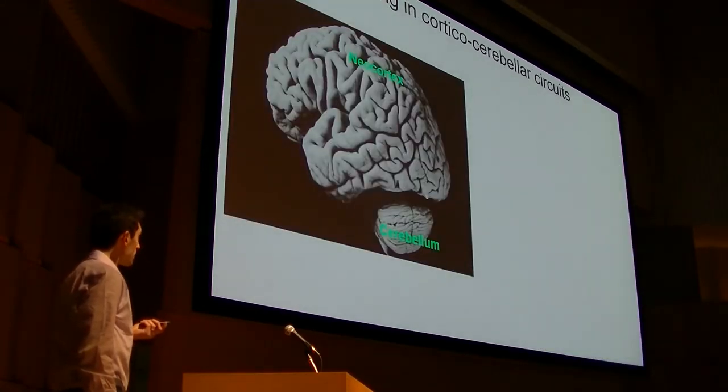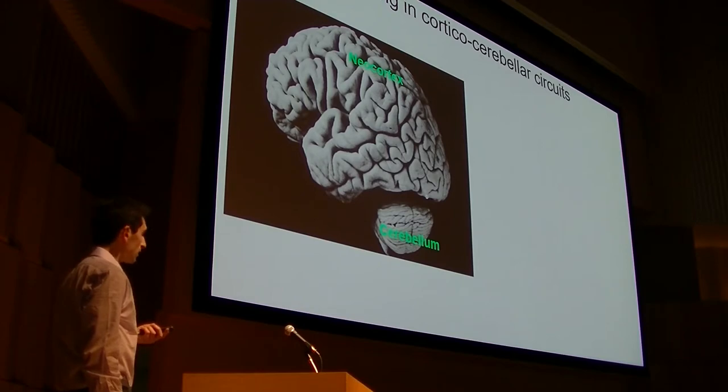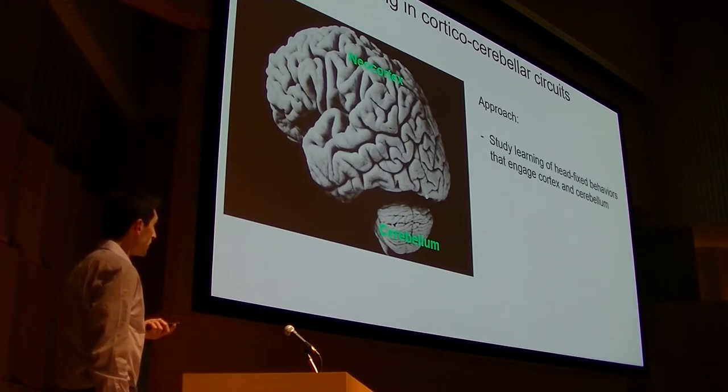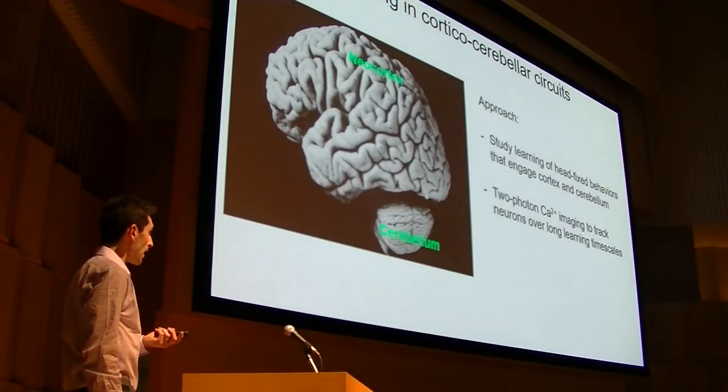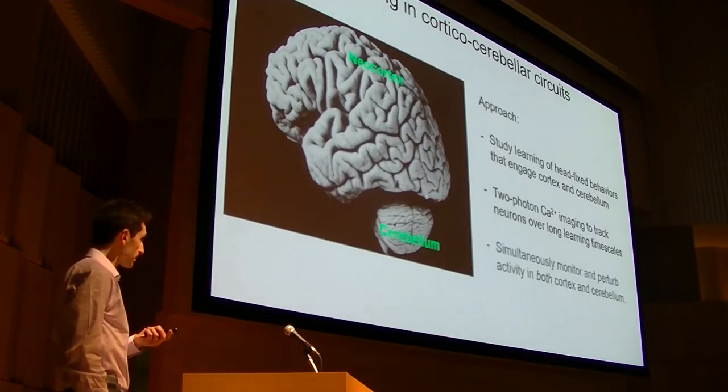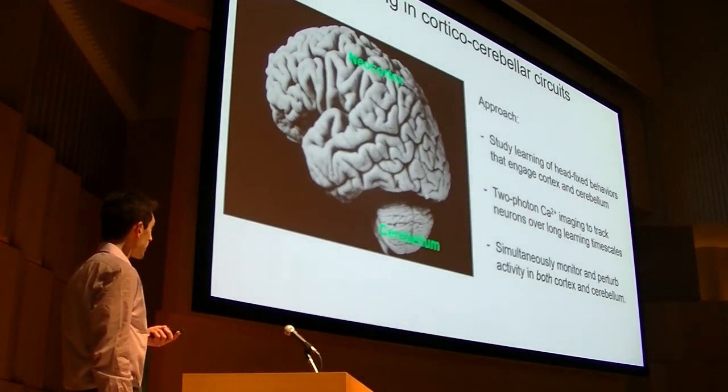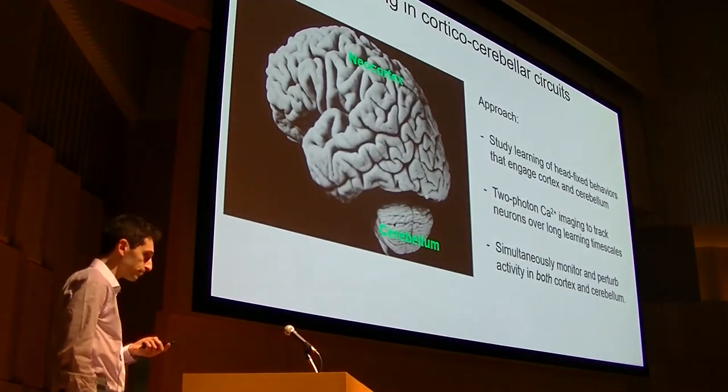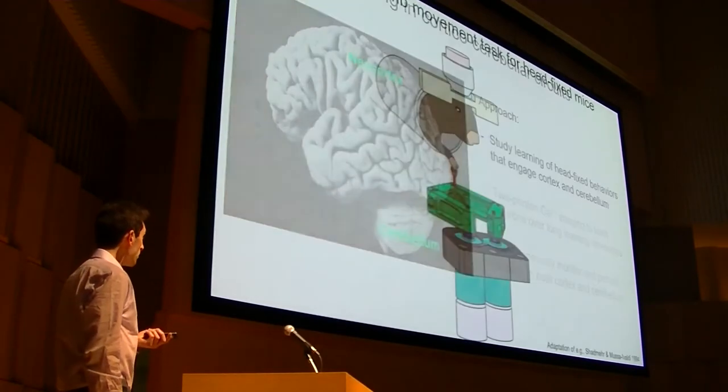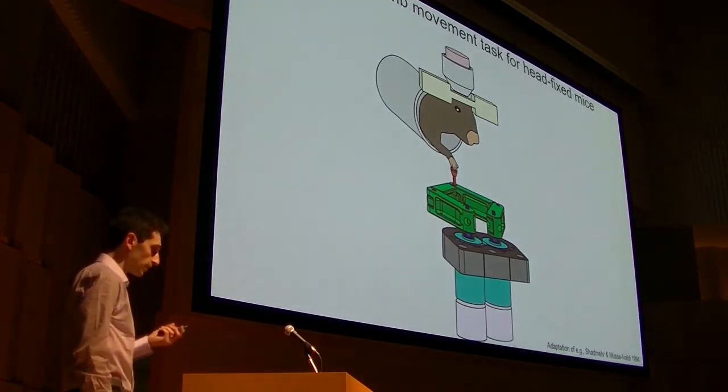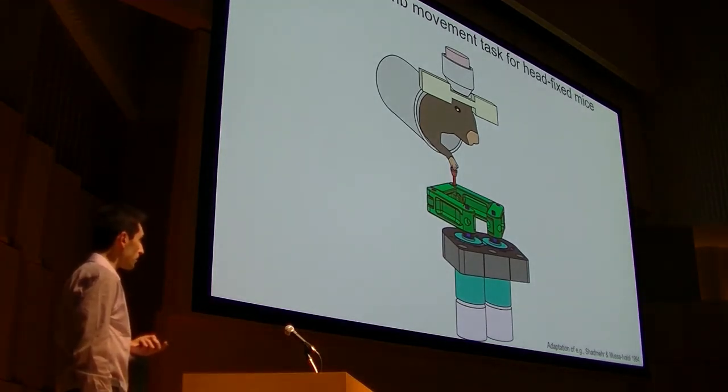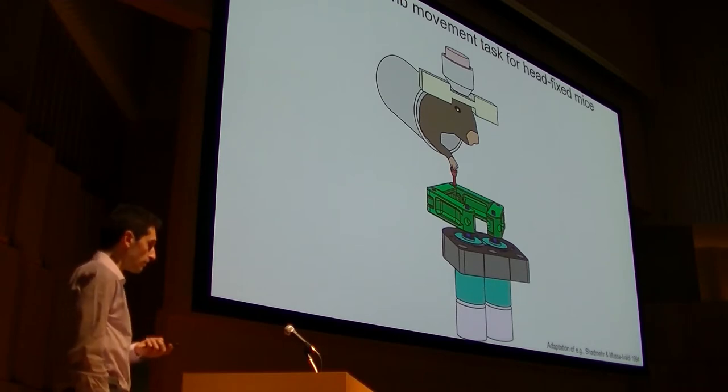So what I've been spending most of my time on is trying to understand how I can study this circuit at a functional level. So I've pushed on a few different fronts. So one is to develop head-fixed behaviors that engage both of these circuits that mice can acquire over weeks-long time scales, and to use two-photon calcium imaging to track the evolution of neural activity over these time scales. And finally, the simultaneous monitoring of activity in both circuits during skill learning.